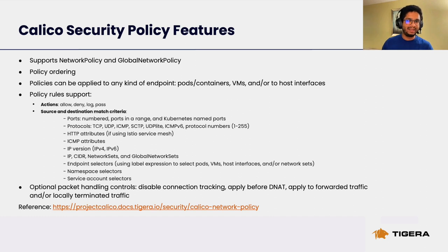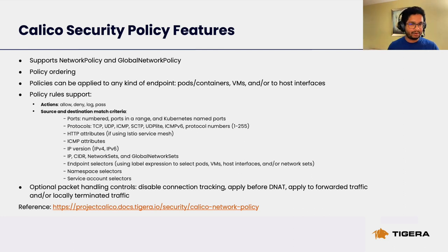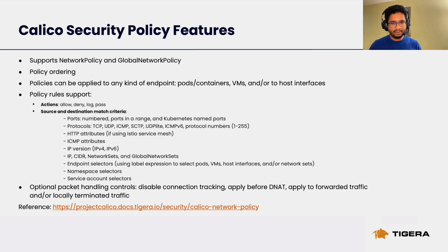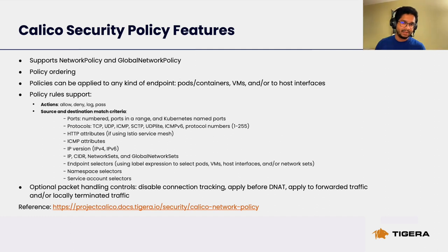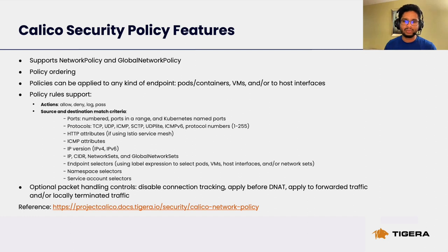Policy rules support allow, deny, log, and pass actions. When specifying source and destinations in a policy rule, there are a number of match criteria. You can match a port based on port numbers, range of ports, or even named ports in Kubernetes. You can specify a protocol such as TCP, UDP, or ICMP. You can also match HTTP attributes, ICMP attributes, IP versions, IPs, CIDRs, network sets, and global network sets. Additionally, endpoint selectors, namespace selectors, and service account selectors are available.